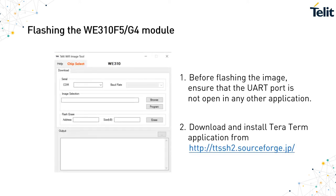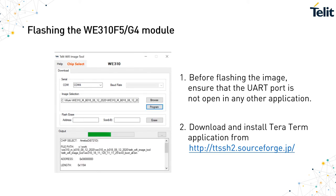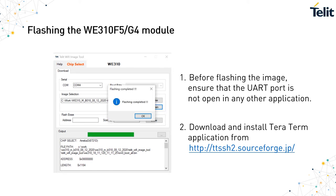In the TELIT Wi-Fi Image Tool application, click Browse. Navigate to the TELIT Wi-Fi Image Tool and select the S2W.bin file. To initiate the flash, click Program. After the flash process is complete, click OK. Close the TELIT Wi-Fi Image Tool.